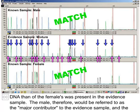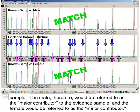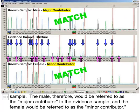The male, therefore, would be referred to as the major contributor to the evidence sample, and the female would be referred to as the minor contributor.